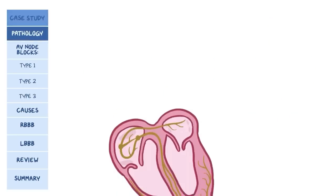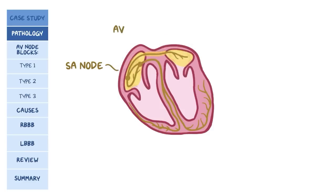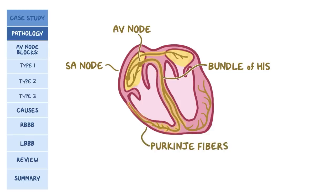The normal electrical activity of the heart starts in the sinoatrial or SA node, located near the opening of the superior vena cava into the right atrium. Electrical activity is then conducted through the atrium to the atrioventricular or AV node, after which it goes through the bundle of His, then the right and left branches of the bundle, and finally through the Purkinje fibers, which deliver the current to the right and left ventricles.